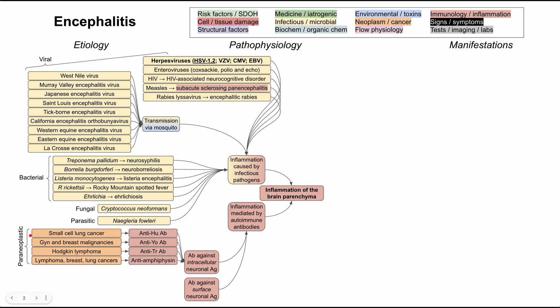Specific paraneoplastic associations include: small cell lung cancer predisposing to anti-Hu antibodies; gynecologic and breast malignancies predisposing to anti-Yo antibodies; Hodgkin lymphoma predisposing to anti-TR antibodies; lymphomas, breast cancers, and lung cancers predisposing to anti-amphiphysin antibodies; and brainstem encephalitis, also involving an intracellular antigen, which contains the anti-Ri antibody.